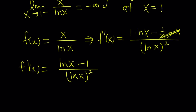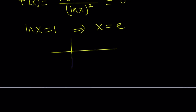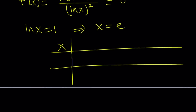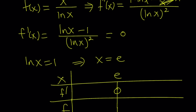There are a couple things to note here. First of all, if you set f prime equal to 0, that's where the derivative changes sign, and that happens to be at ln x equals 1, which is x equals e. So we can go ahead and make a sign chart for this function. If x is greater than e, then ln x is going to be greater than 1, so our derivative is going to be positive.